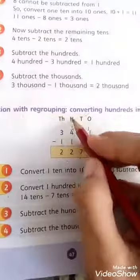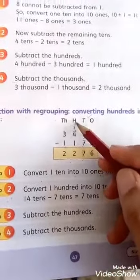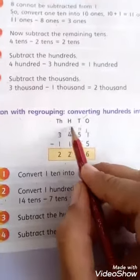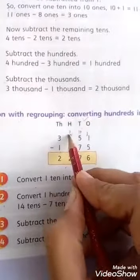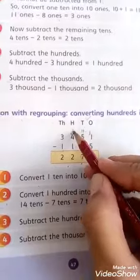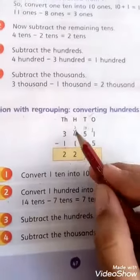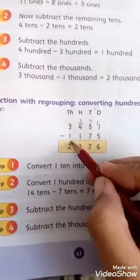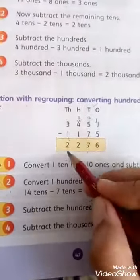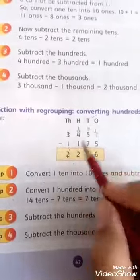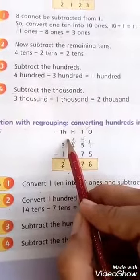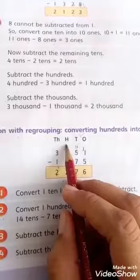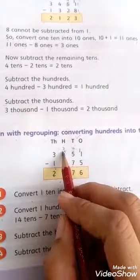Now in step 3 you have to solve the hundreds column. As you took 1 carry in the tens column, here 3 is remaining, so you have to subtract 1 from 3 — the answer will be 2. In step 4, you have to solve the thousands column: subtract 1 from 3 and the answer will be 2. I hope you have understood the concept of subtraction without regrouping and with regrouping. You have to practice these questions in your notebooks also. Stay blessed, Allah Hafiz, fi amanillah.